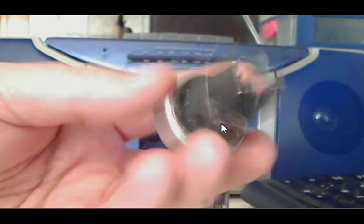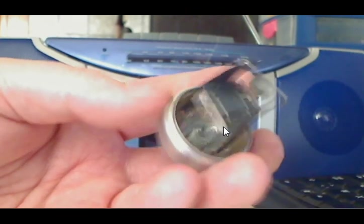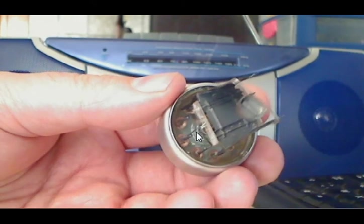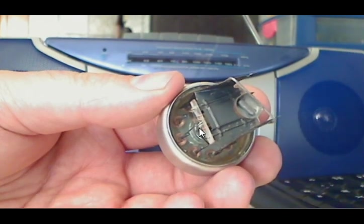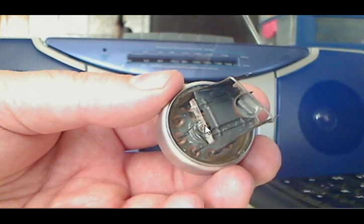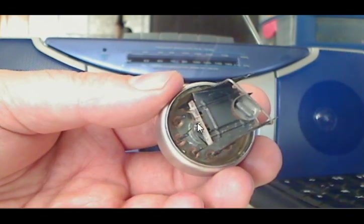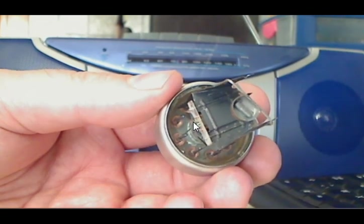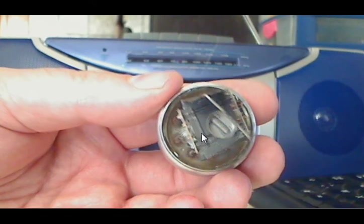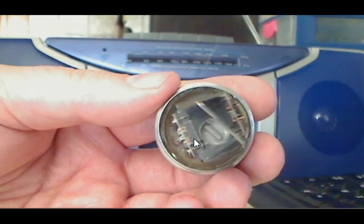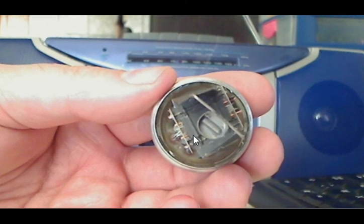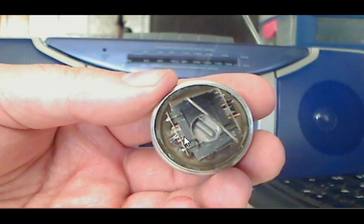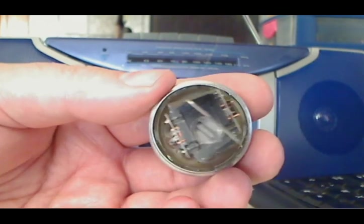Turn it around. If you look from the top, we see here two small wires from the heater filament. Next to it is the connection for the cathode, which is this rectangular tube here.